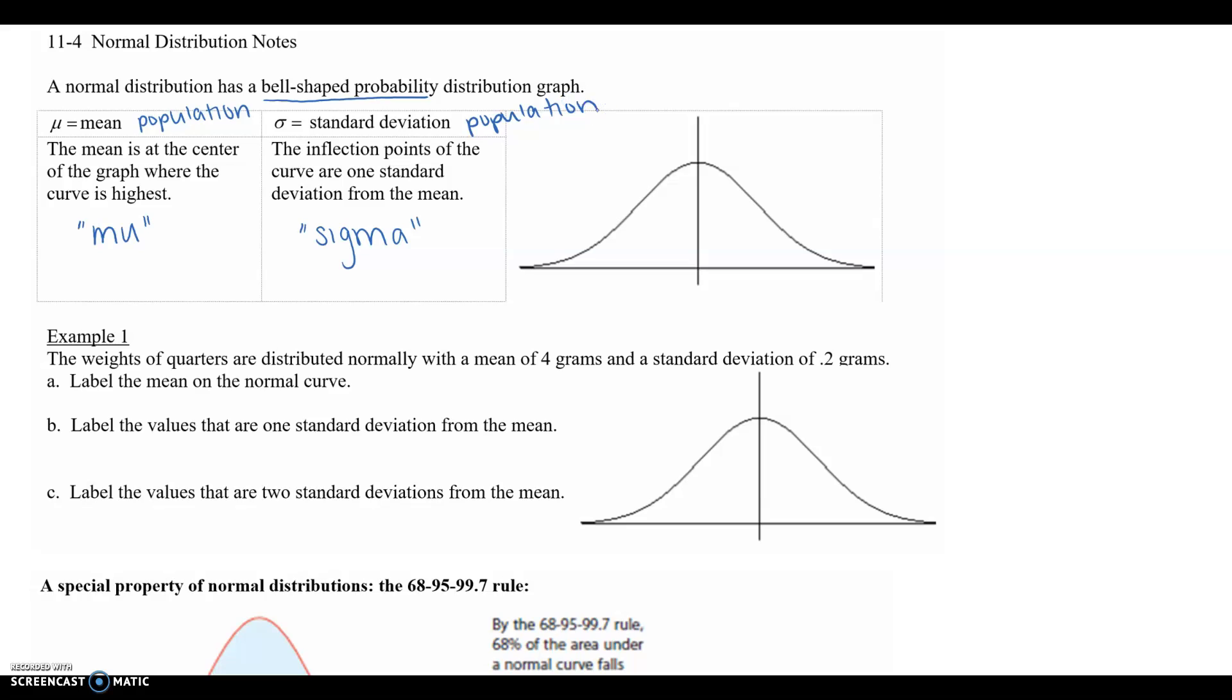So the mean is at the center of the graph where the curve is the highest, which we also talked about when we learned about the types of distributions and skewness. And then what standard deviation is, is the inflection points of the curve that are one standard deviation from the mean.